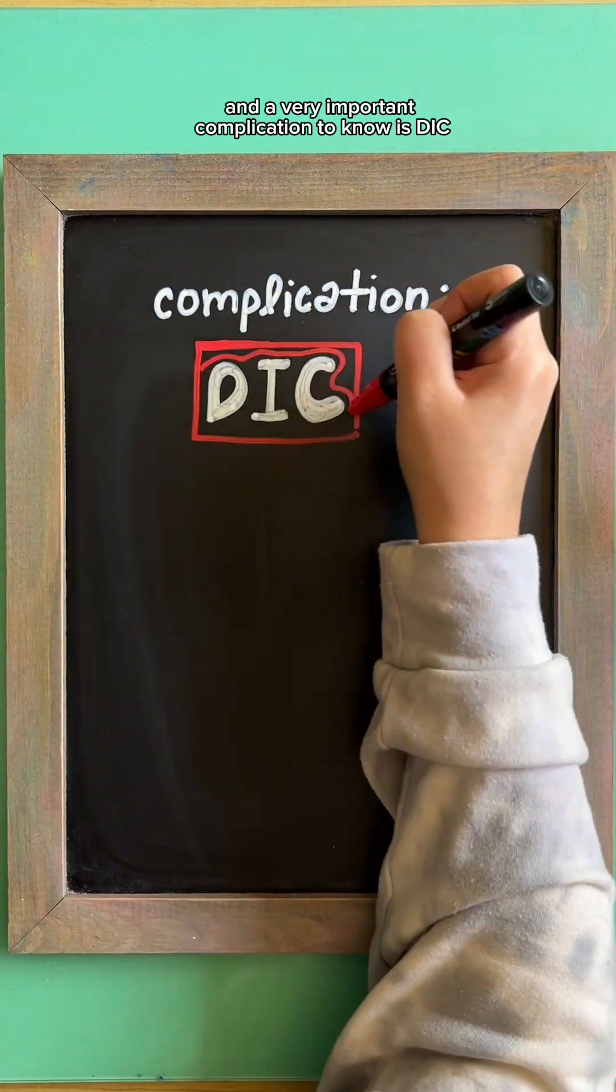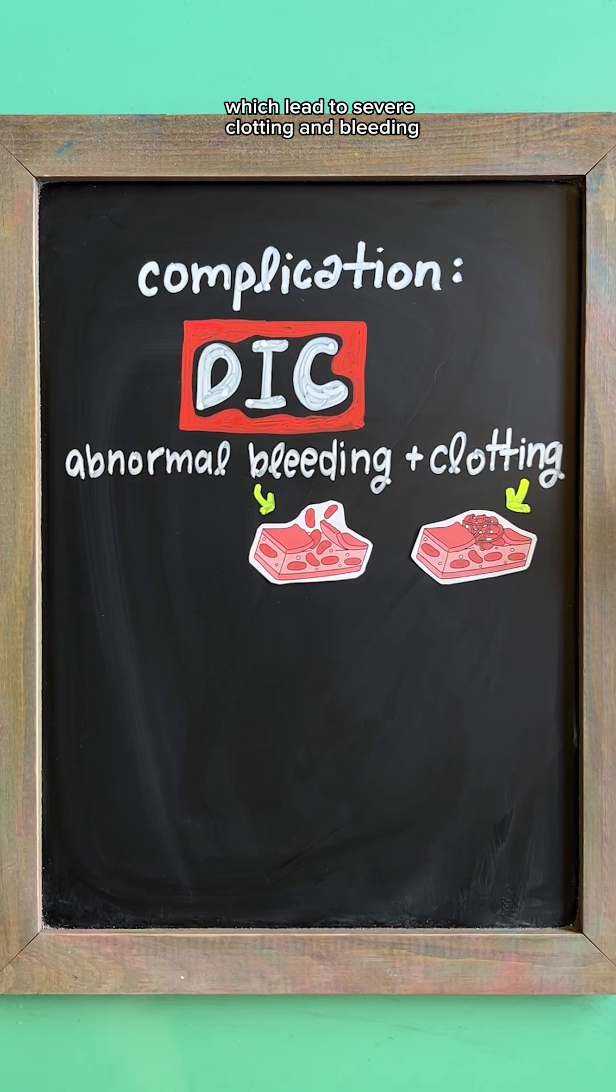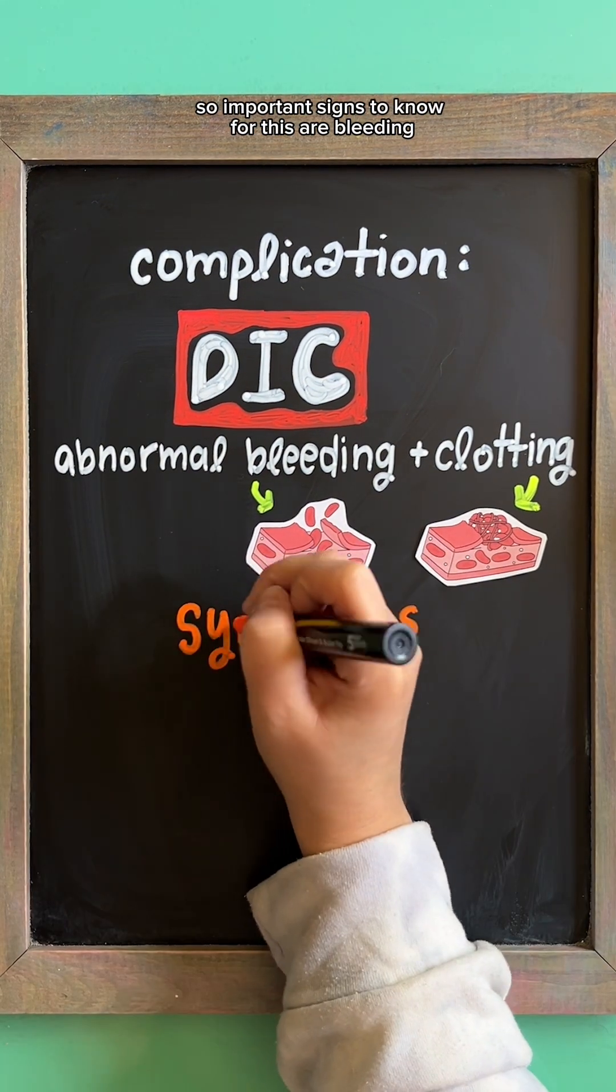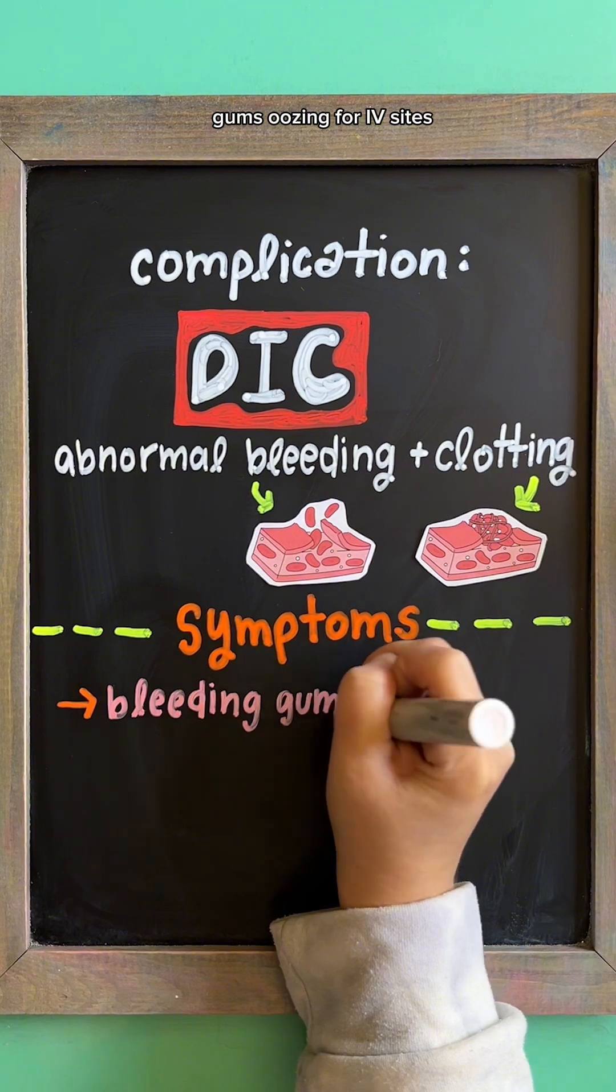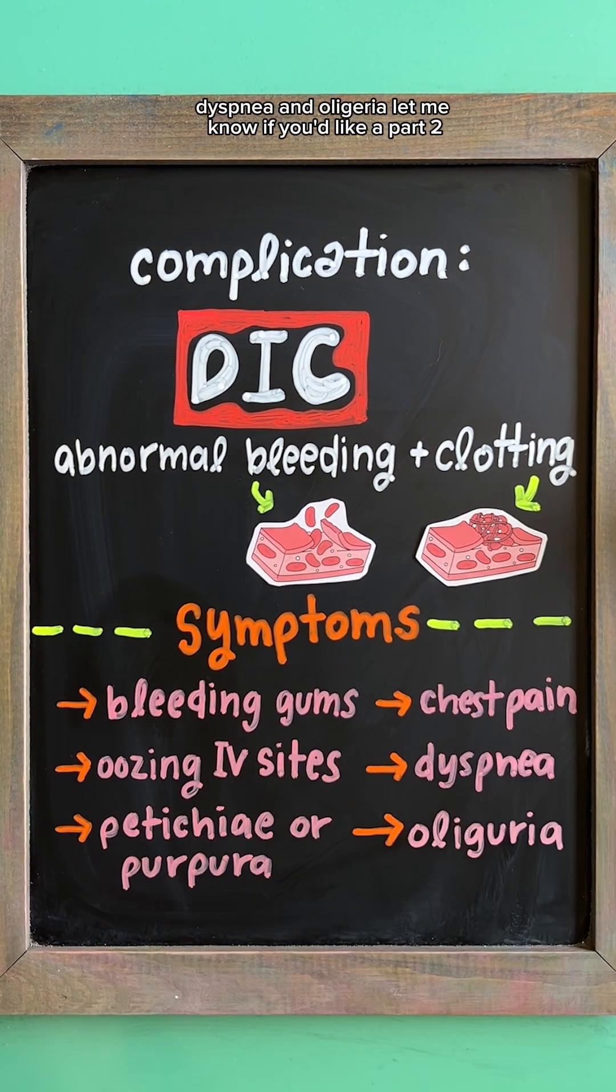And a very important complication to know is DIC. The placental detachment triggers the clotting cascade, which can lead to severe clotting and bleeding. Important signs to know for this are bleeding gums, oozing from IV sites, petechiae or purpura, chest pain, dyspnea, and oliguria.